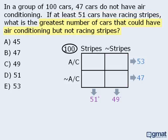The question asks us to find the greatest number of cars that could have air conditioning but not racing stripes. Since this box is reserved for cars that have air conditioning but not racing stripes, our goal is to maximize the number of cars in this box. Let's add a star to this box to remind us of our goal.